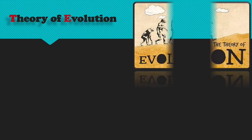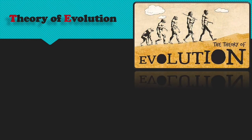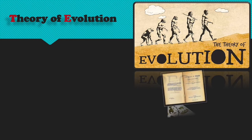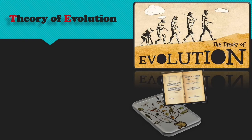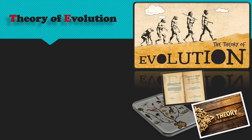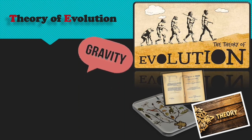The theory of evolution encompasses the world's established scientific view that organic life on our planet has changed over long periods of time and continues to change by a process known as natural selection. When scientists use the word theory, they refer to a group of principles or laws developed over many years through rigorous hypothesis testing. Such theories are backed up with mathematical formulas and lines of evidence that, when taken together, explain a series of observations.